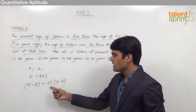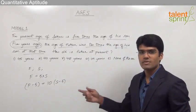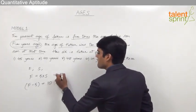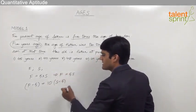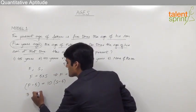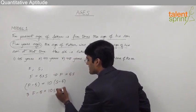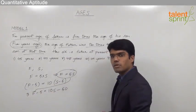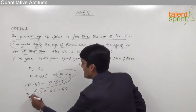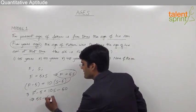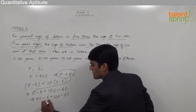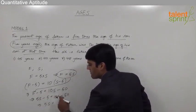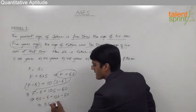Now we have 2 equations with 2 variables, F and S. By solving these 2 equations we can find out father's age. The first equation says F equals 5S. From the second equation we get F minus 5 equals 10S minus 50. Substituting F equals 5S into the second equation, we get 5S minus 5 equals 10S minus 50. From this, 10S minus 5S gives 5S equal to 50 minus 5, that is 45.